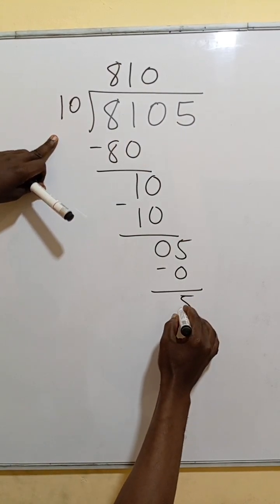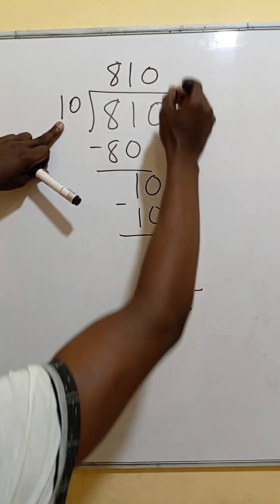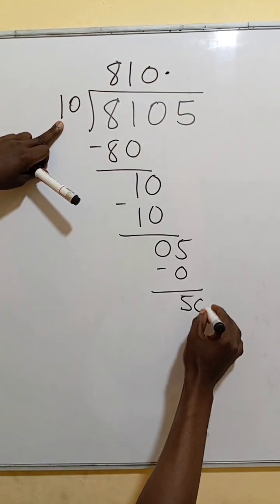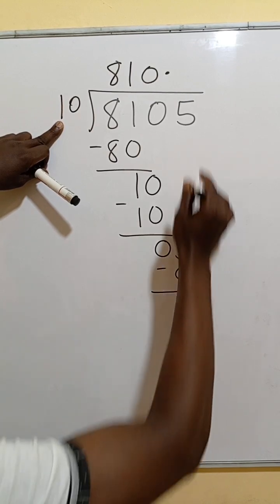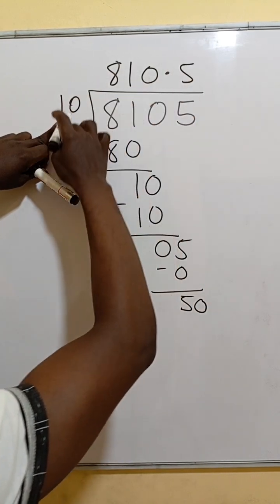If we subtract, it cannot go, so we need to drop, but there's nothing to drop, so 0.0. 10 into 50, 5 times. 5 times that.